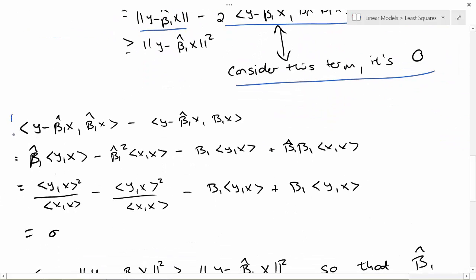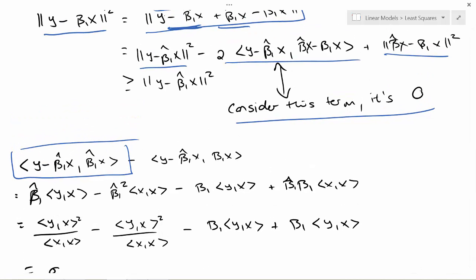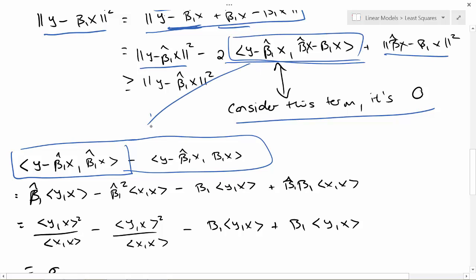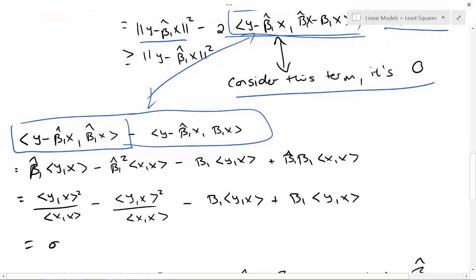So here I have the main part of that term, whereas if it's 0, here I have the whole thing expanded out. If this term, which is equal to that, is 0, then we'll have shown that beta_1 hat is exactly the minimizer of the least squares criteria.